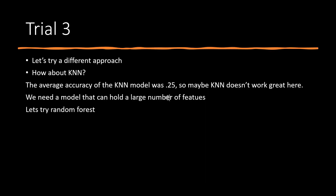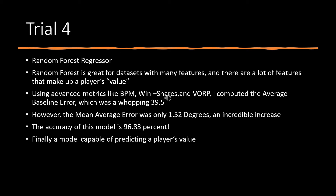Next, I went with a k-nearest neighbors approach. However, the average accuracy of the KNN model was about 0.25, so let's avoid this one. Let's try a random forest regressor instead. This is a great algorithm for datasets with many features, and there are a lot of features that can make up a player's value. Using advanced metrics like BPM, win shares, and VORP, I computed the average baseline error, which was a very high 39.5. However, the mean average error was only 1.52, which is an incredible improvement. The accuracy of this model was a great 96.83%, so we finally found a model capable of predicting a player's value.